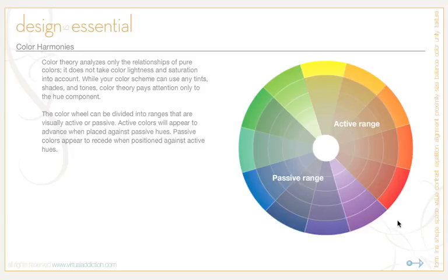The color wheel is divided into ranges that are visually active or passive. Active colors appear to advance when placed against passive hues, while passive colors tend to recede when positioned against active hues. Advancing hues are most often thought to have less visual weight than receding hues. Warm, saturated, light-value hues are active and visually advance, while cool, low-saturated, dark-value hues are passive and visually recede.